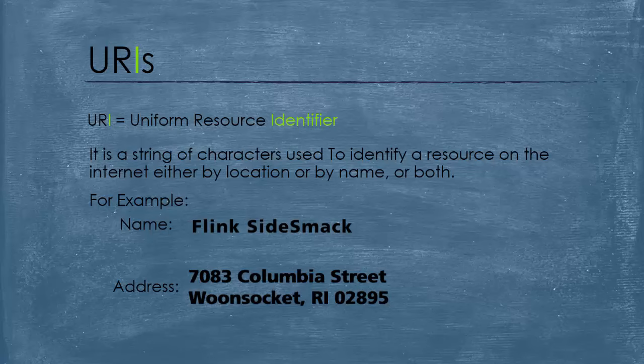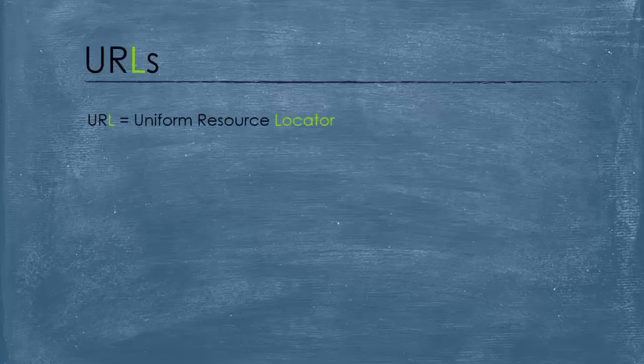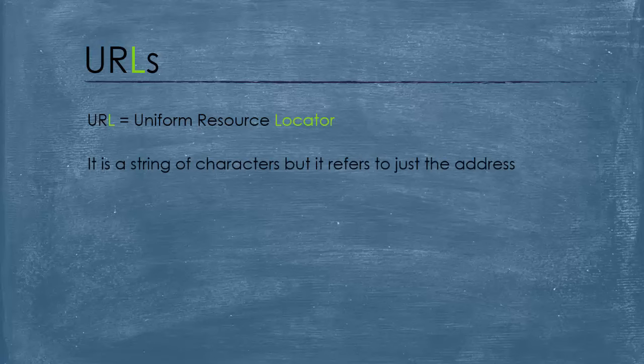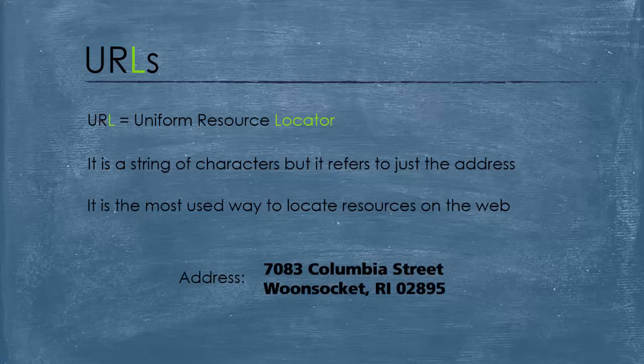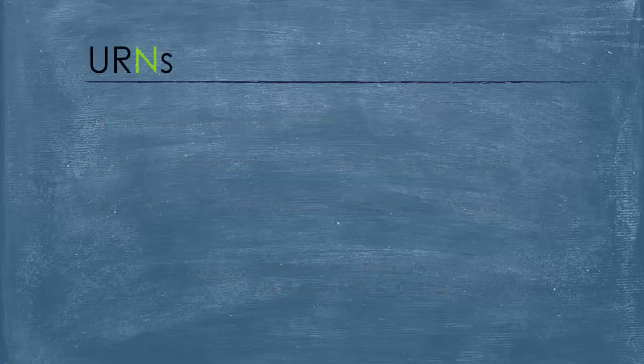A URL stands for Uniform Resource Locator, and it is pretty self-explanatory. It is also a string of characters, but it refers to just the address — just the location of the resource. It is the most used way to locate resources on the web. In our case, we can identify our friend by just using his location.